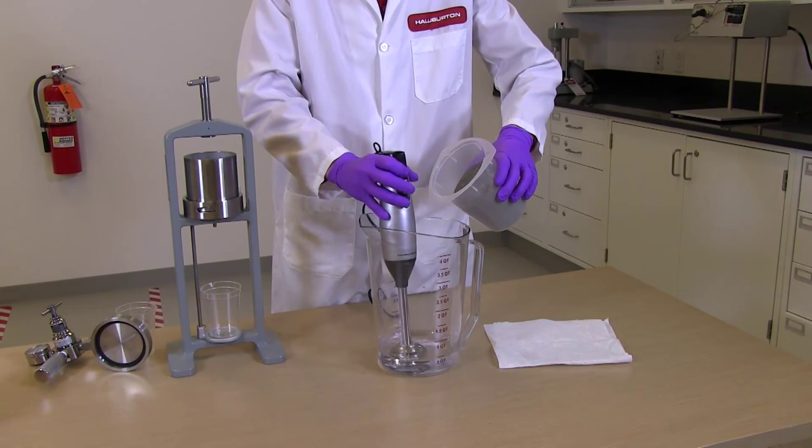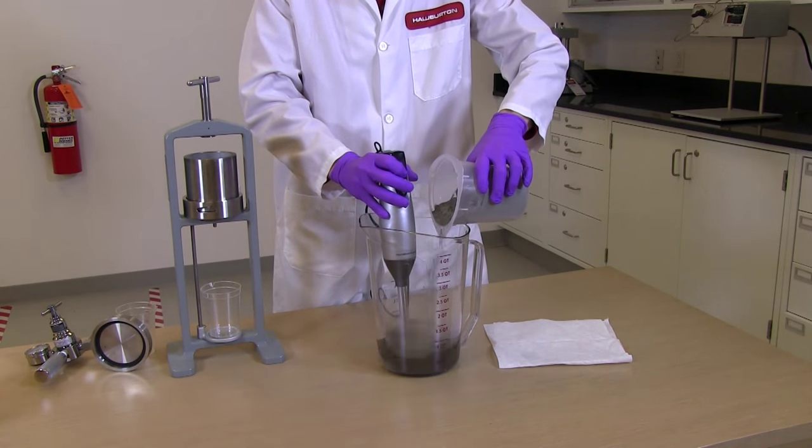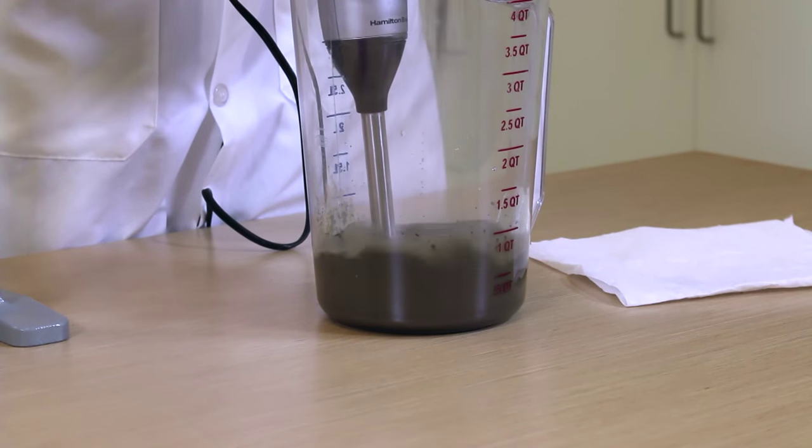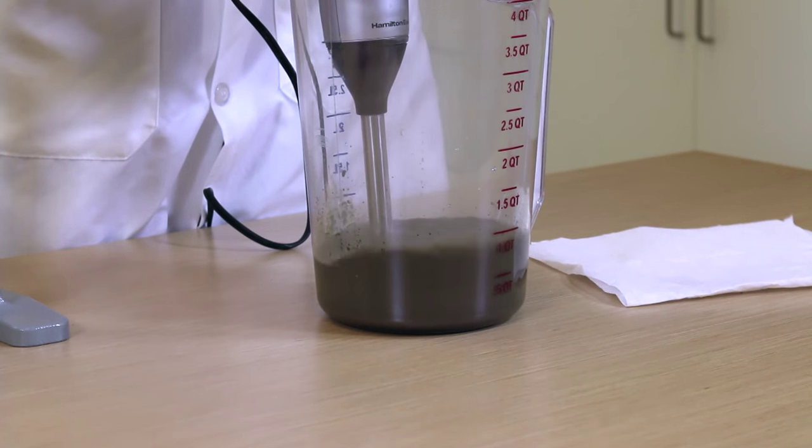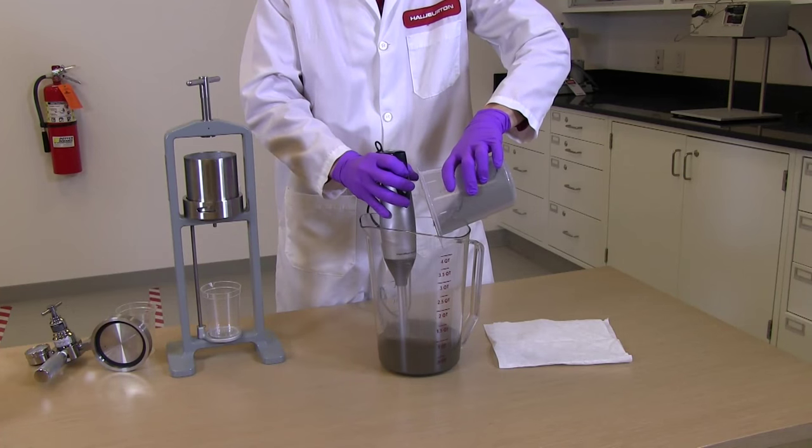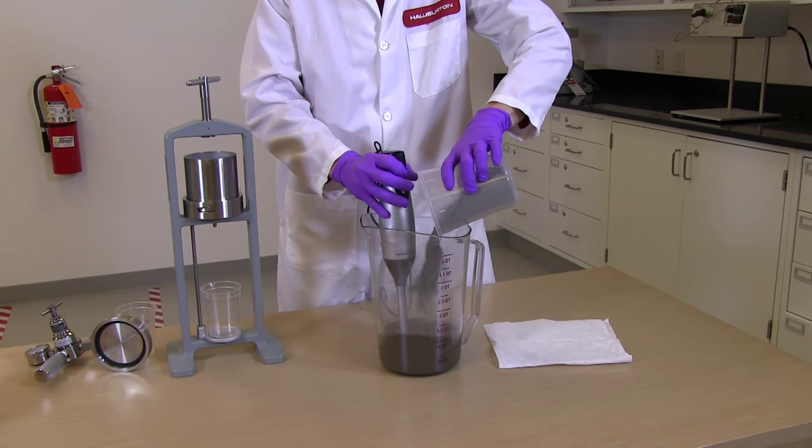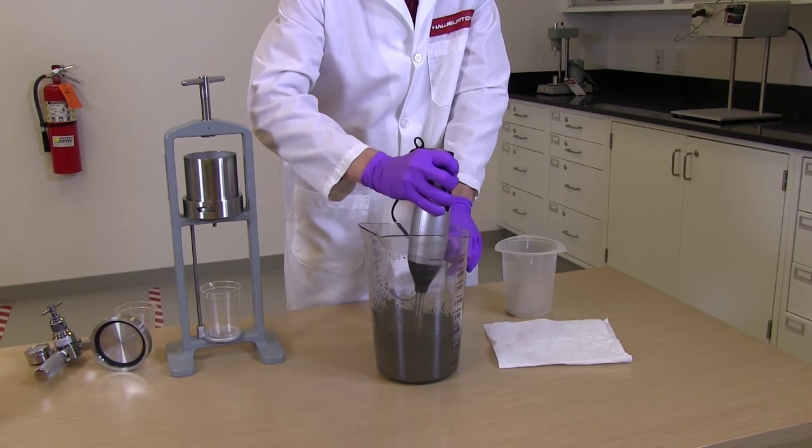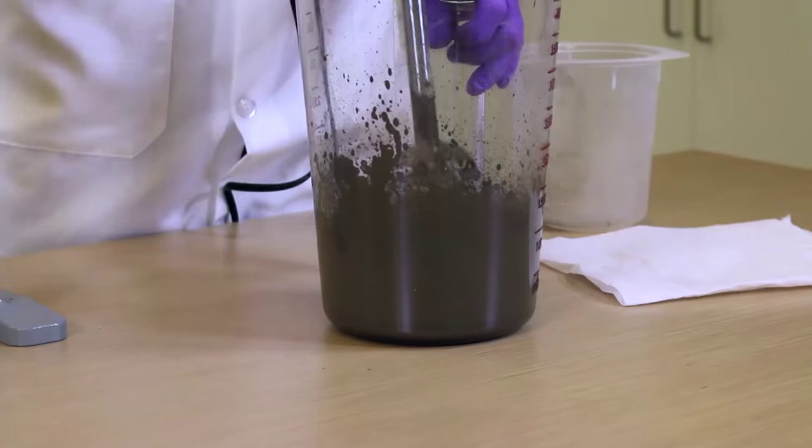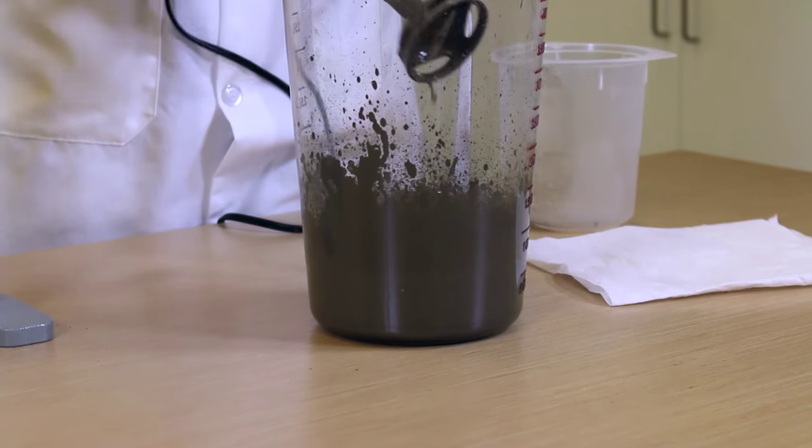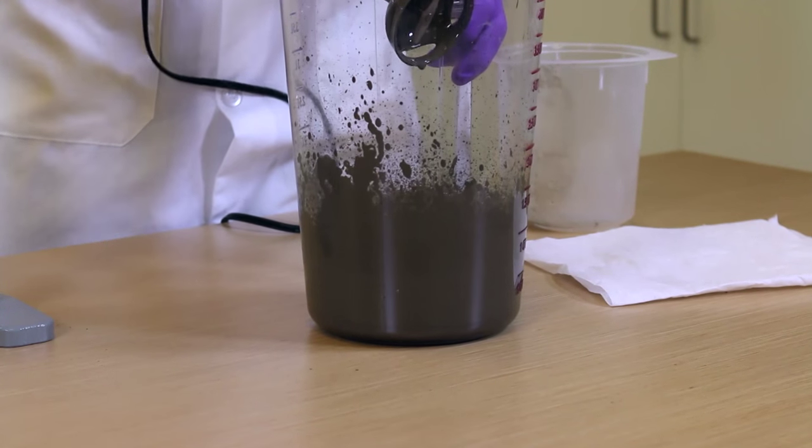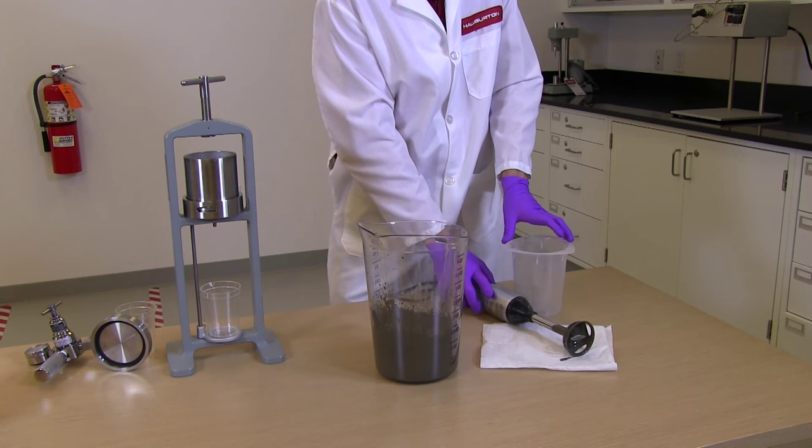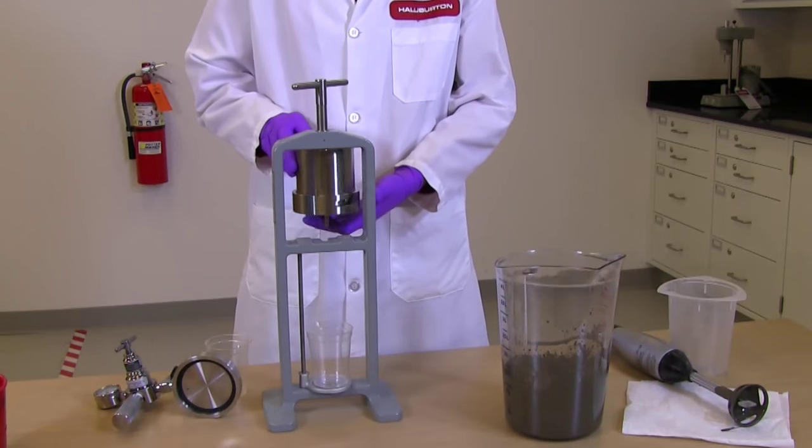We'll start with a mixing cup, water, blender, and cement. Now that we've thoroughly mixed our cement, we'll put it in a filter press.